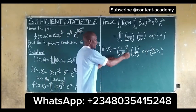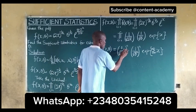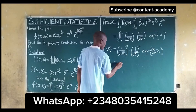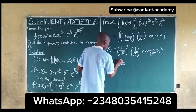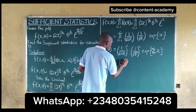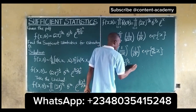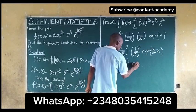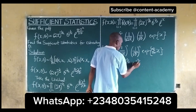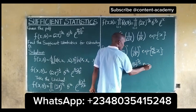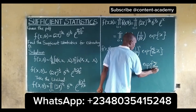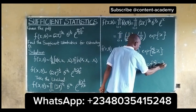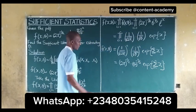The next thing is to rearrange this properly. We can write this same thing as (2θ)^(−n/2) multiplied by θ^(−n/2) multiplied by exp(summation of xi, as i running from 1 to n). We note that −n/2 plus −n/2 equals −2n/2, so this cancels to give us −n overall.